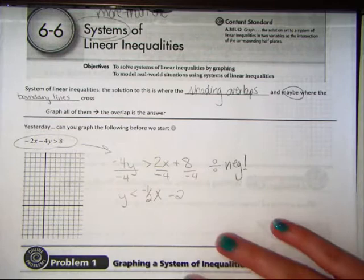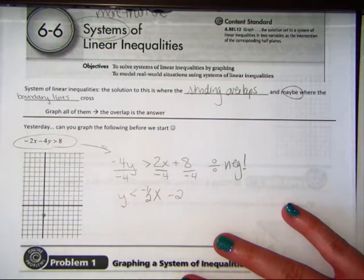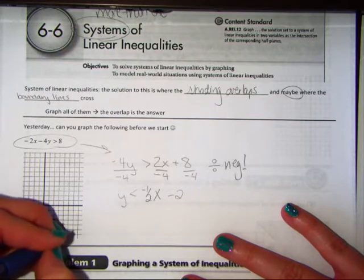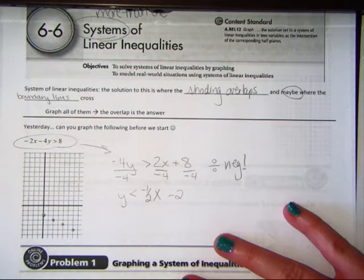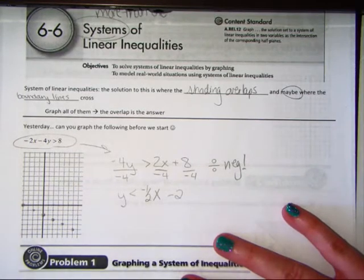When you divide by a negative, what do you do? Flip your sign. And you get negative 1 half x, and now you have a minus 2. When we graph this, we start with our y-intercept of negative 2 on the y-axis. And then from that point, we go down 1, right 2, down 1, right 2, down 1, right 2.